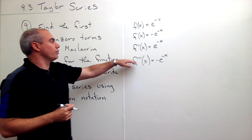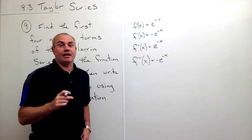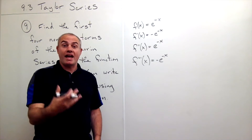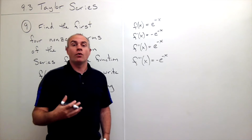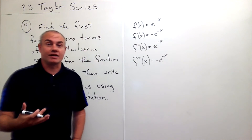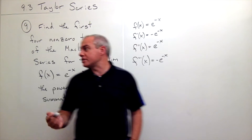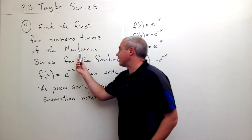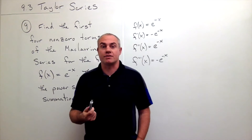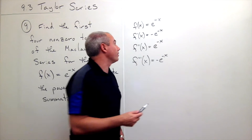Now that I've got a few derivatives written down, the second thing I want to do is I want to plug in the a value, or the center value, of my power series. In this case we know it's a Maclaurin series, and what Maclaurin series means is that a is equal to zero.